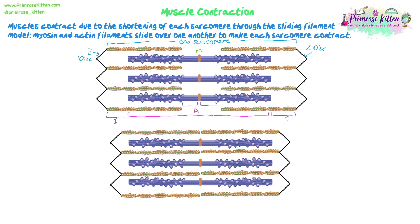We're going to look at muscle contraction — how does the muscle actually contract, how does it get smaller? Muscles contract due to the shortening of each sarcomere through the sliding filament model, or the sliding filament theory. The myosin and actin filaments — the myosin is the thicker, purple ones on these diagrams and the actin is the thinner yellow ones — slide over one another to make each sarcomere contract.